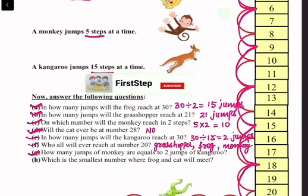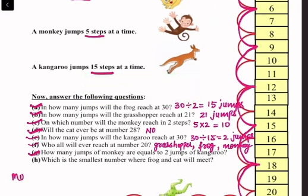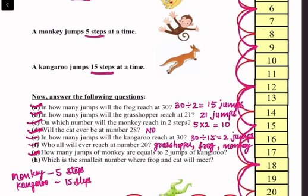(g) How many jumps of the monkey are equal to two jumps of the kangaroo? The monkey jumps 5 steps at a time and the kangaroo jumps 15 steps at a time. If the kangaroo jumps two times it reaches 30, so the monkey needs 30 divided by 5 = 6 jumps. Six jumps of the monkey are equal to two jumps of the kangaroo.